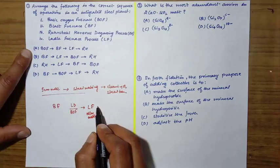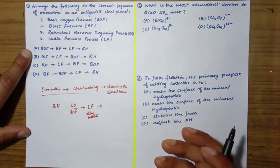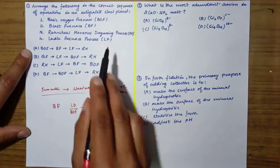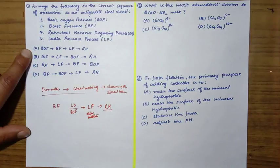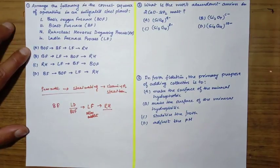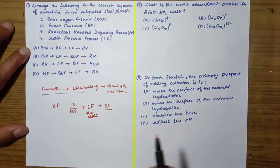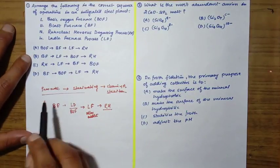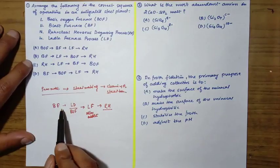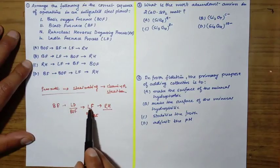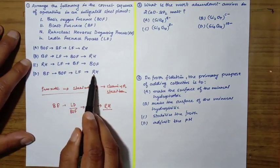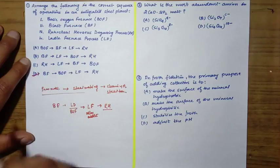After ladle furnace, to make very clean steel, we use RH degassing process in which we make very fine quality steel. So the correct sequence will be: blast furnace, then BOF, then ladle furnace, then RH. Correct option is D.